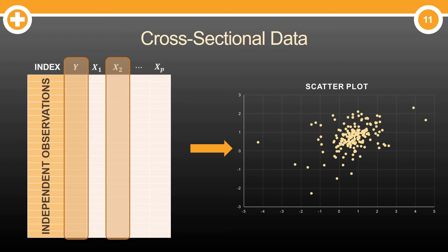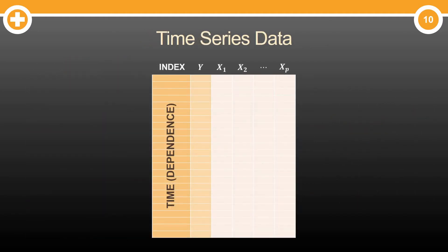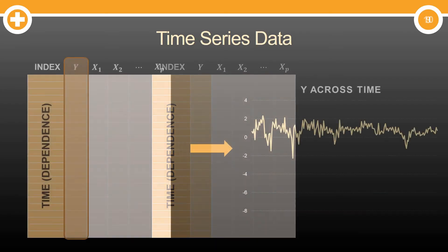But in time series data, it's a little bit different. This indexing variable is actually time itself, which means there's a dependence there as I'm watching a series evolve. So my y is no longer just an independent collection of observations. It's a collection of successive points.